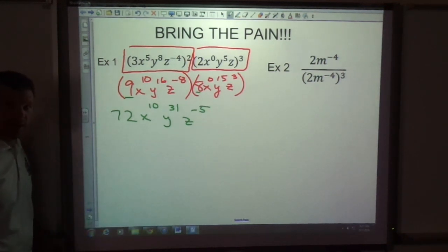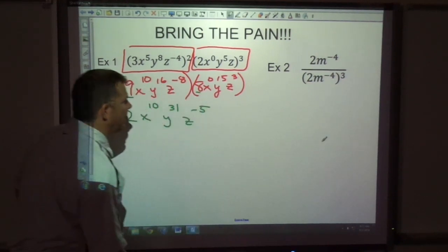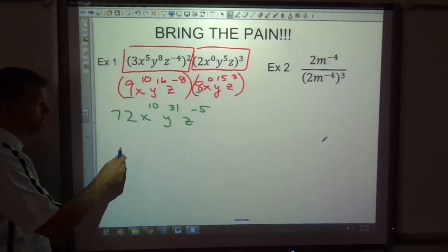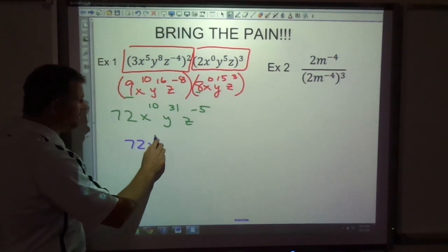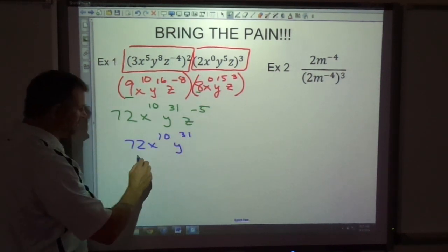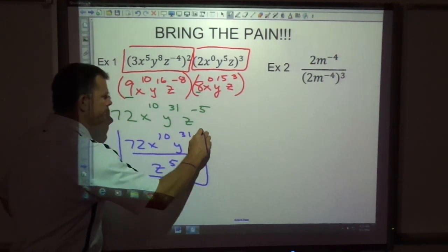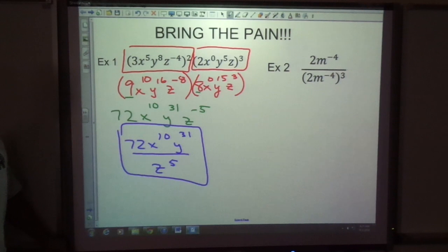Don't ever leave your answer sitting like this with a negative exponent sitting there. We always want to finish that. This means when it's negative, I do not want to be in the upstairs. I don't live here, I want to go someplace else. This guy has to go in the bottom, z to the fifth downstairs.